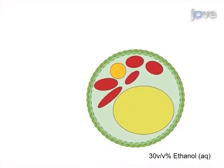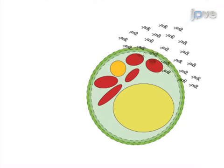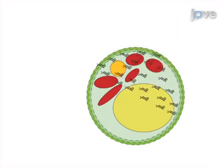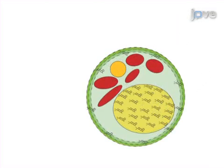This is achieved by first suspending the cells in an ethanol solution to permeabilize the cell wall and cell membrane. As a second step, Nile Red fluorescent dye is added, which enters the cells and accumulates in the non-polar regions of the cell, including the neutral lipid bodies.